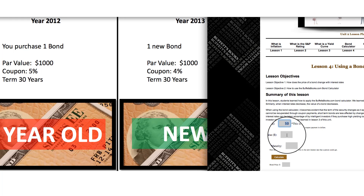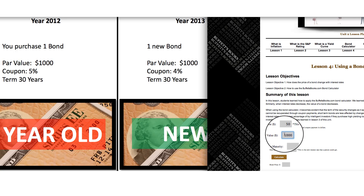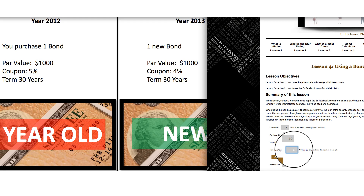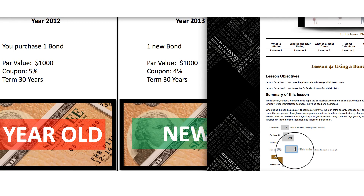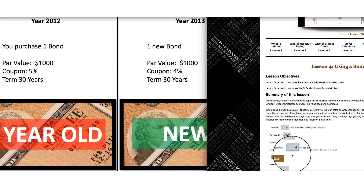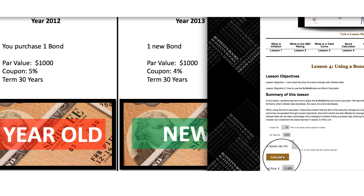The par value is $1,000 — don't put any dollar signs, just the numbers. The years to maturity, since we've held it for one year, are 29 years. The new interest rate we're comparing to is 4%, so just put in 4 — no decimal or .04 needed. Hit calculate and the bond price increased. Our bond that we're holding is worth $1,169.